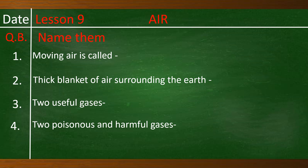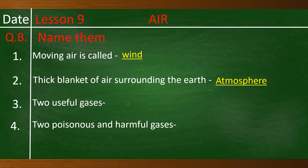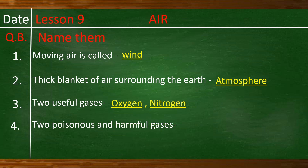Hope children, you have all answered. Now let us check the answers. Number 1: Moving air is called — Wind. Spelling: W-I-N-D. Number 2: Thick blanket of air surrounding the earth — Atmosphere. Spelling: A-T-M-O-S-P-H-E-R-E. Number 3: Two useful gases — Oxygen and Nitrogen. Spellings: O-X-Y-G-E-N; N-I-T-R-O-G-E-N.